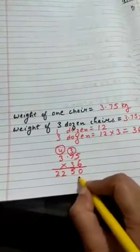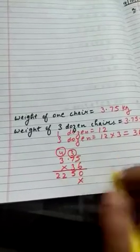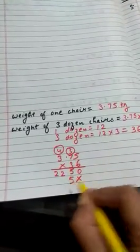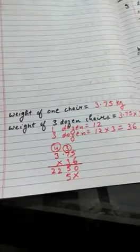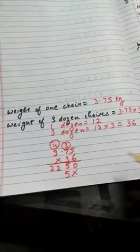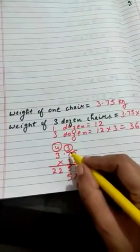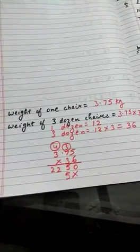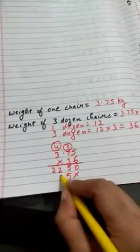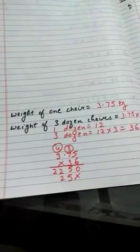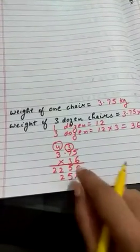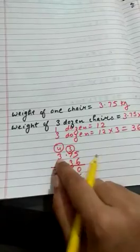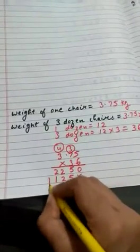Calculation bohut dhyan se karni hai. 3 into 5, 15. 15 ka 5 aur 1 carry. To 1 ko hum apne mind mein rakhenge. 3 into 7, what we get. We get 21 and 1 carry also. Usko bhi add karna hai, we get 22. 2, aur 2 kahan jayega, carry. Now 3 into 3, we get 9. And 9 plus 2, we get 11.